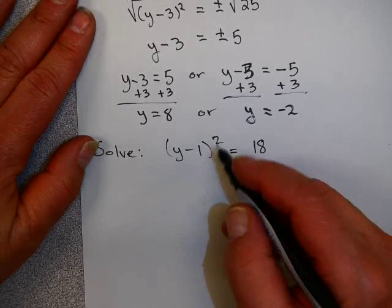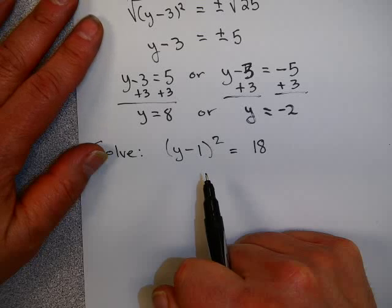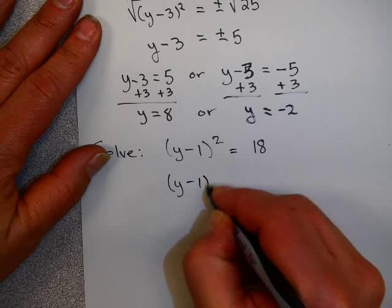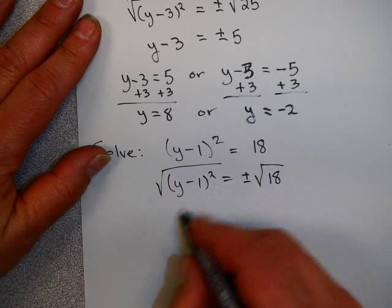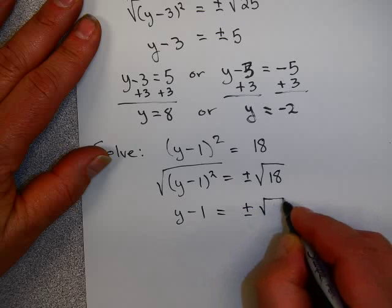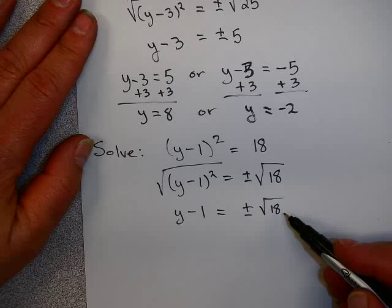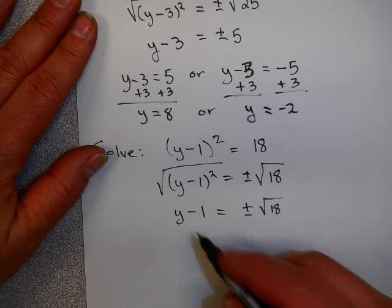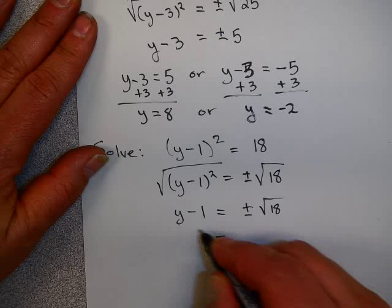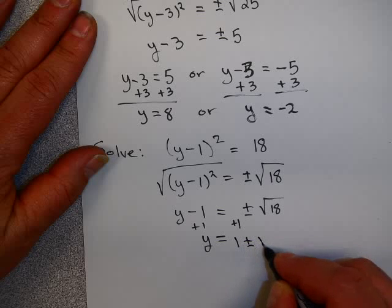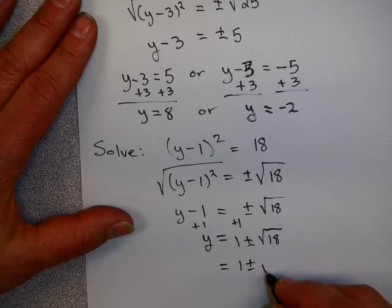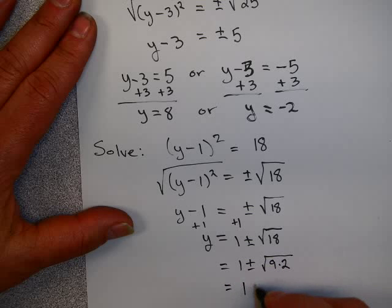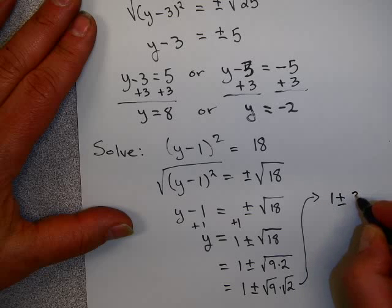See if you can solve this one by yourself. You might want to stop the video and then continue when you are finished. Alright, I'm going to take the square root of each side. This is y minus 1. This is the square root of 18. Now, notice, the square root of 18, I chose a number which was not a perfect square. Now, that's alright. We can deal with that. And I could write this by adding 1 to each side. As just 1 plus or minus the square root of 18. I'm perfectly happy with that answer. But you could simplify the square root of 18 by saying the square root of 18 is 9 times 2. And the square root of 9 times the square root of 2. So this ends up being 1 plus or minus 3 times the square root of 2.